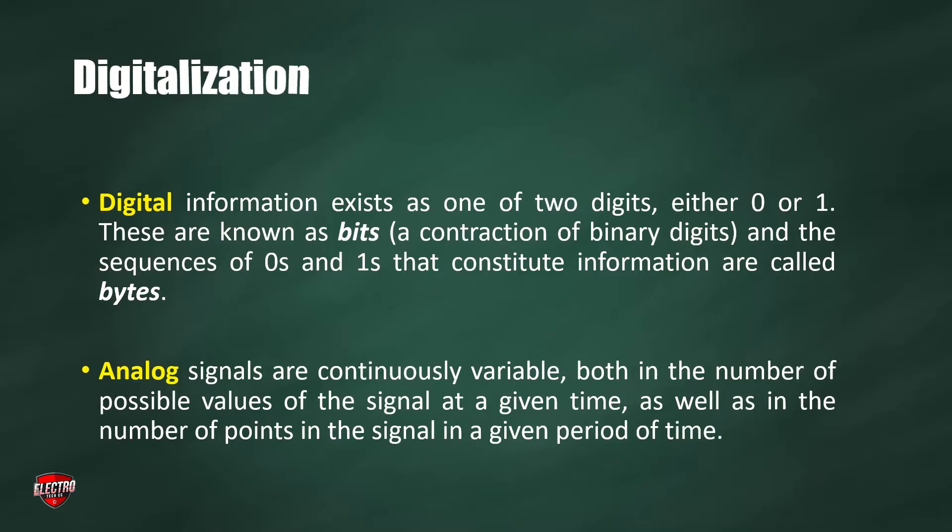Analog signals are continuously variable both in the number of possible values of the signal at a given time as well as in the number of points in the signal in a given period of time. This is the basic difference between digital signal and analog signal. With the help of digital signals, digitalization is possible.